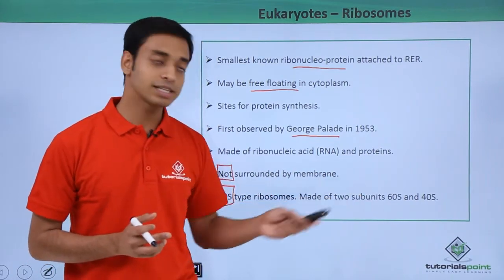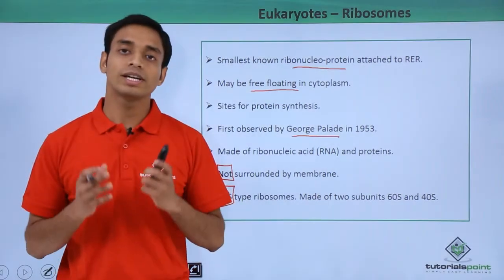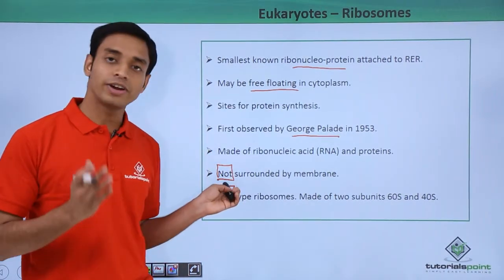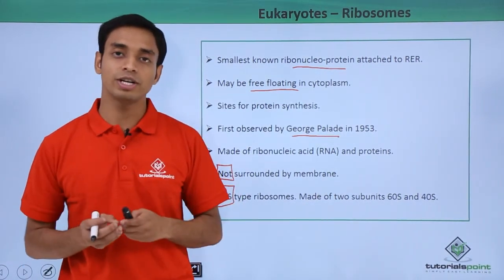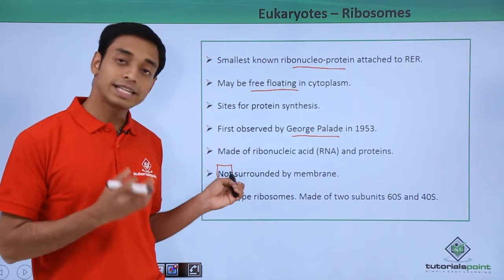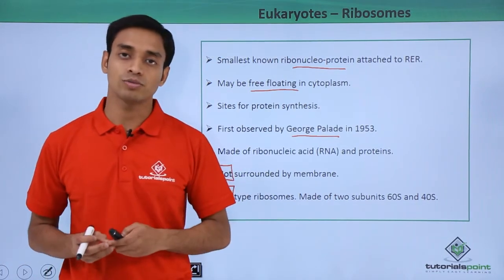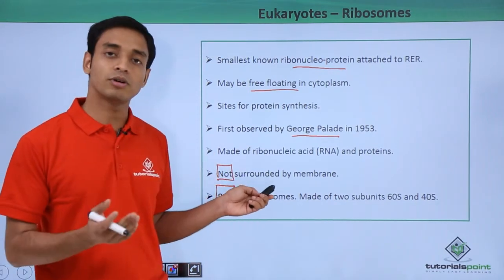The 'S' here stands for the Svedberg unit, which is the unit of measurement of the sedimentation coefficient of the ribosomes. So the 80S ribosome is made up of two subunits: the 60S and the 40S.